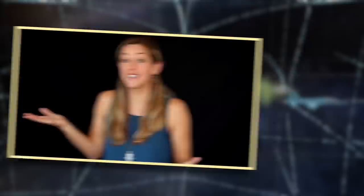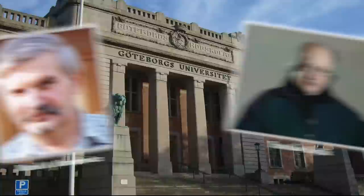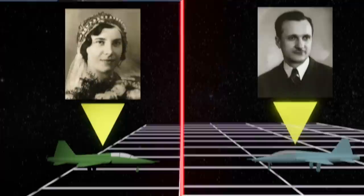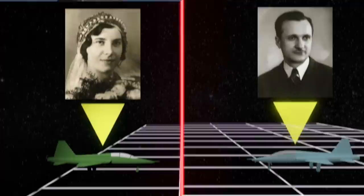For the last century or so, we've been told the key to resolving the twin paradox lies in the fact that, in order to remain younger than their sibling, one of the twins has to accelerate. But in 2009, two European physicists published a paper where they demonstrated that this isn't always the case. Entitled Adding to the Paradox, The Accelerated Twin is Older, the paper presents a scenario where the twin who accelerates actually ages more than their sibling.